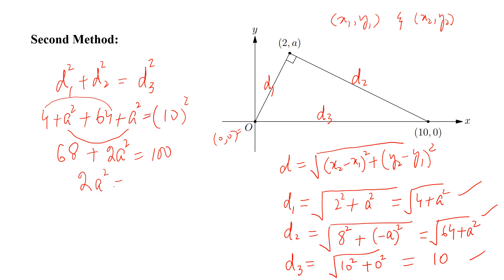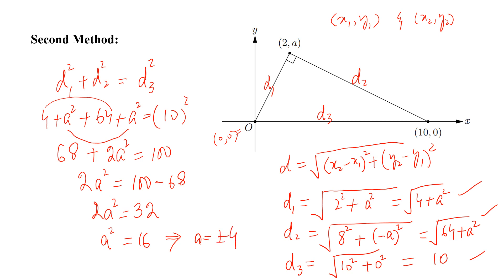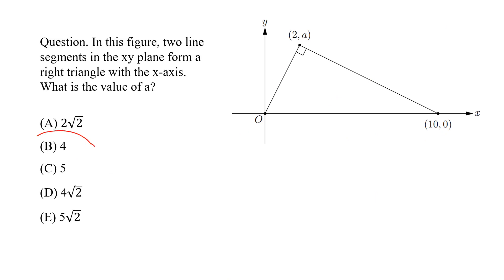So 2A squared equals 100 minus 68, which is 32. Therefore A squared equals 16, and A equals plus or minus 4. We choose A equals 4 because the point is in the first quadrant. The correct answer is option B.